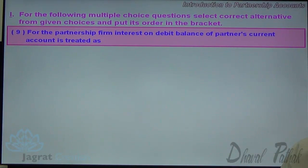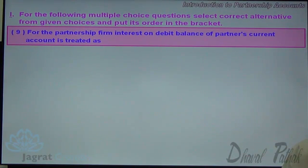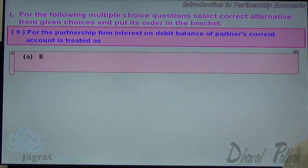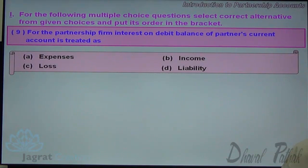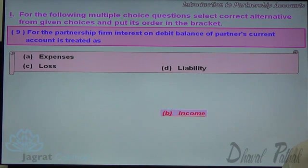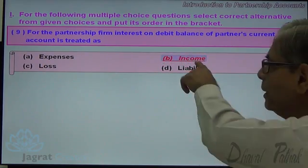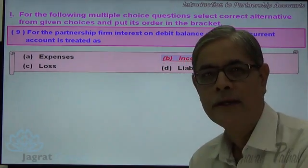Next. Interest on the debit balance of a partner's current account is treated as what? It is credited to the profit and loss appropriation account as income to the firm. So it is treated as income. Option B is the correct answer.